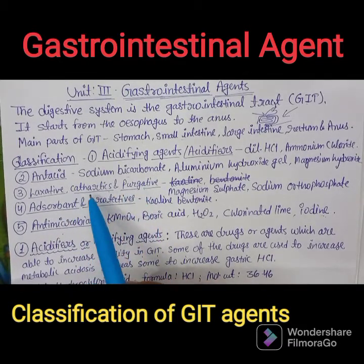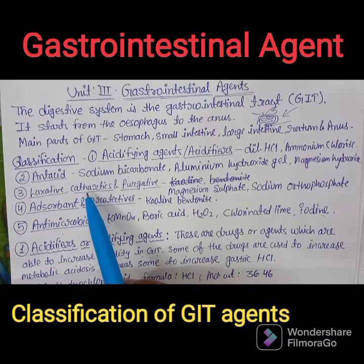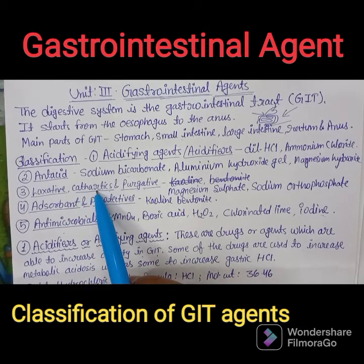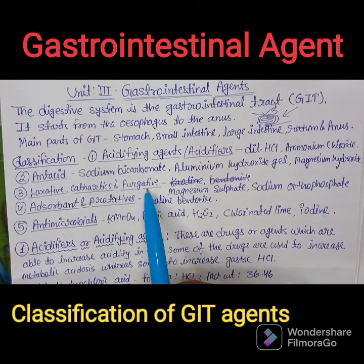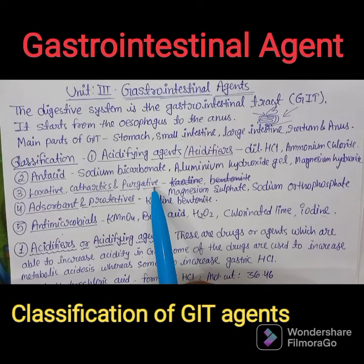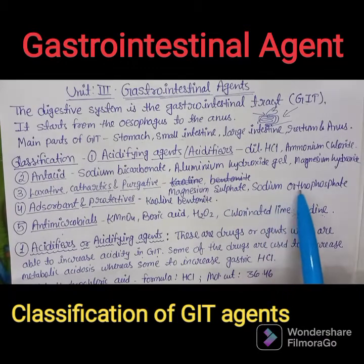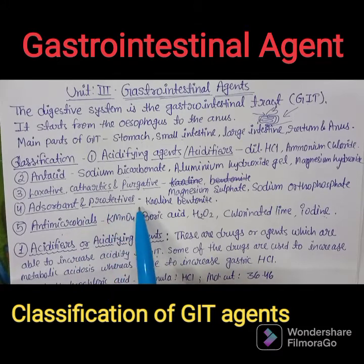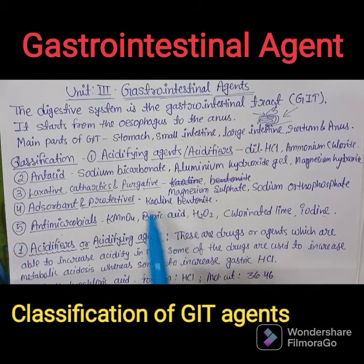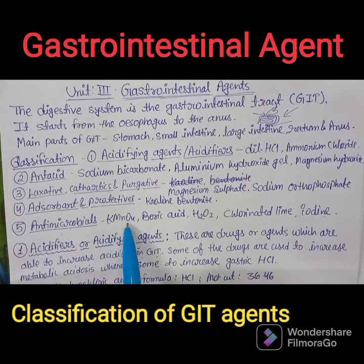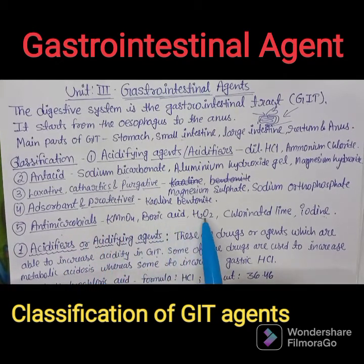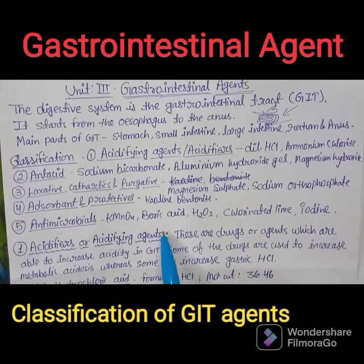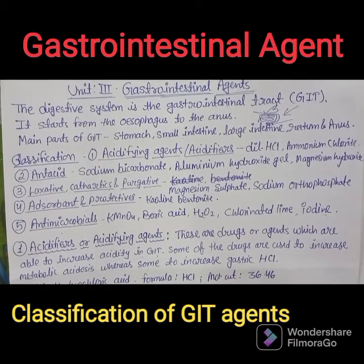The third classification is laxatives, cathartics, and purgatives. These agents help in stool formation and are useful in constipation. Examples include magnesium sulfate and sodium orthophosphate. The fourth class is adsorbents and protectives, with examples like kaolin and bentonite. The fifth class is antimicrobials, including potassium permanganate, boric acid, hydrogen peroxide, chlorinated lime, and iodine.